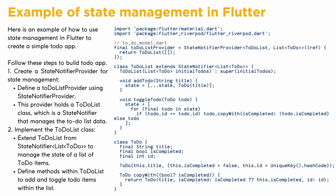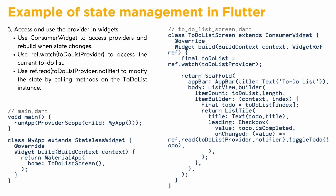Step 2 — implement the ToDoList class. Extend ToDoList from StateNotifier<List<ToDo>> to manage the state of a list of to-do items. Define methods within ToDoList to add and toggle to-do items within the list. Step 3 — access and use the provider in widgets. Use ConsumerWidget to access providers and rebuild when state changes. Use ref.watch(toDoListProvider) to access the current to-do list, and ref.read(toDoListProvider.notifier) to modify the state by calling methods on the ToDoList instance.